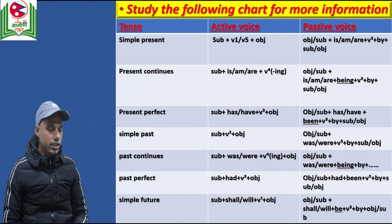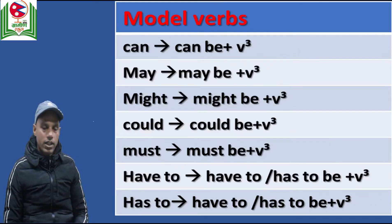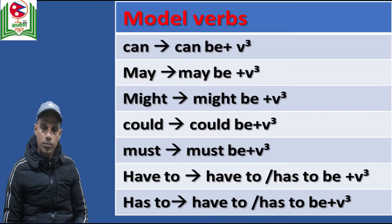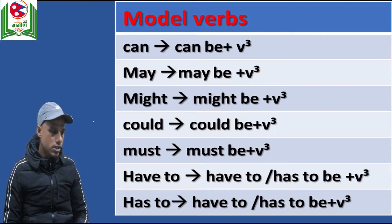I have provided a chart here showing how to change an active voice in different tenses into passive. You can notice the structures and change accordingly. If there are modal verbs like can, may, might, could, must, have to, has to in the active voice, then change them in passive by adding 'be': can → can be, may → may be, might → might be, could → could be, must → must be, have to → have to be, has to → has to be. Always use the past participle form in the passive voice.